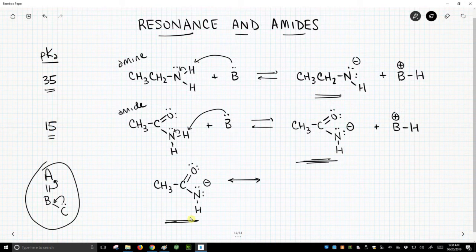I've redrawn it at the bottom of the screen. We have a double bond between the carbon and the oxygen, and a single bond to this nitrogen with a lone pair. So we're going to apply our resonance. We're going to take our lone pair on nitrogen and make a new carbon-nitrogen bond, and that will break this carbon-oxygen bond.